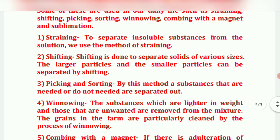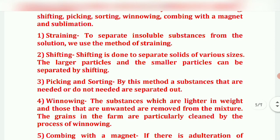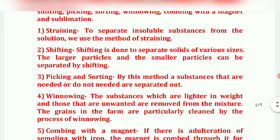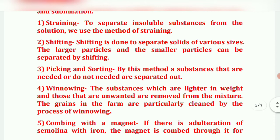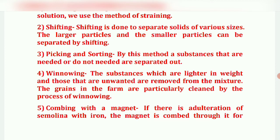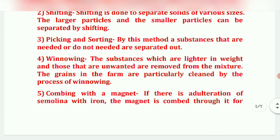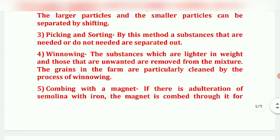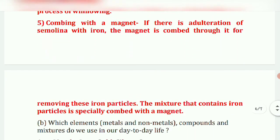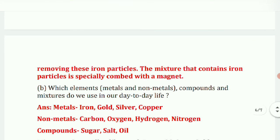Sifting is done to separate solids of various sizes — large and smaller particles can be separated this way. By picking and sorting, substances that are needed or not needed are separated. Winnowing removes lighter and unwanted substances from the mixture; grains on the farm are cleaned by winnowing. If there is adulteration of semolina with iron, a magnet is combed through it to remove the iron particles.